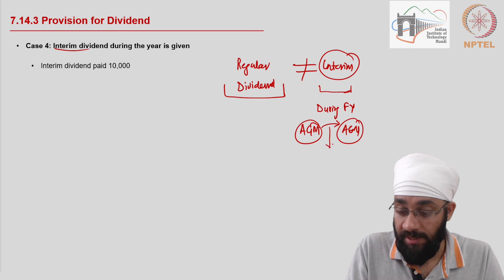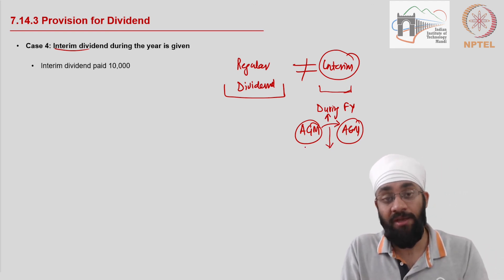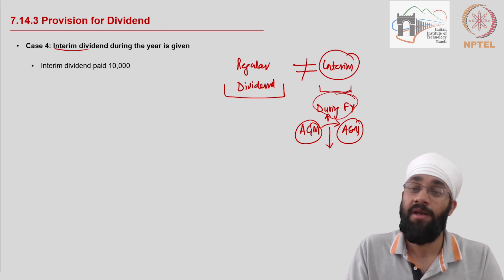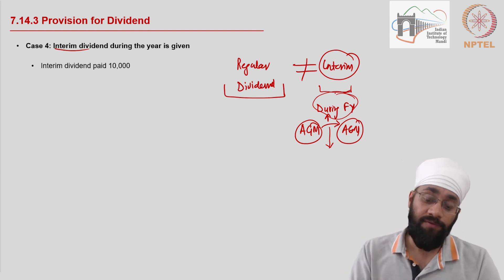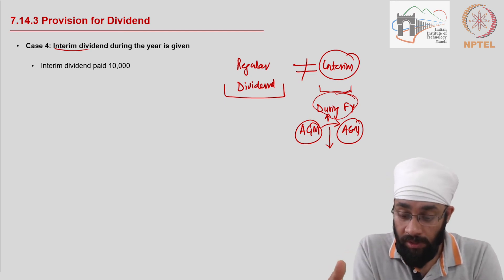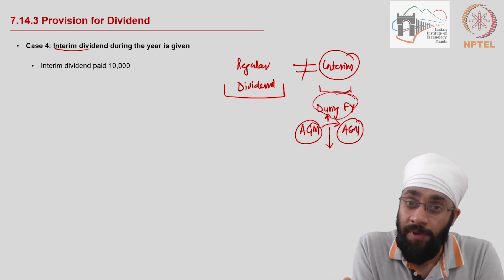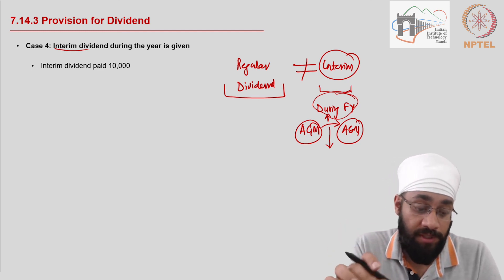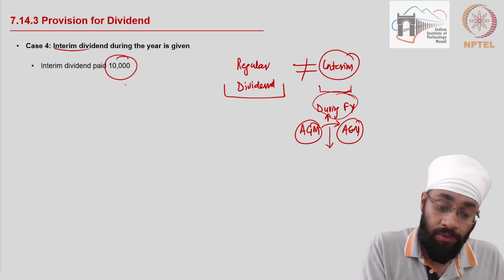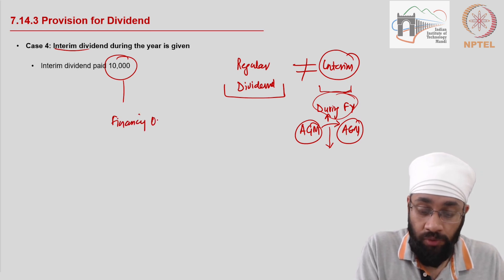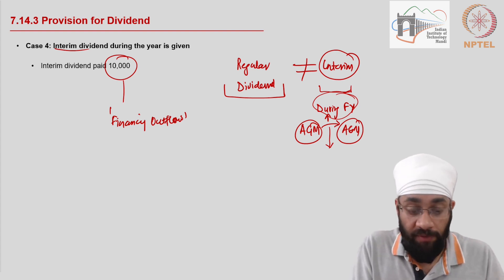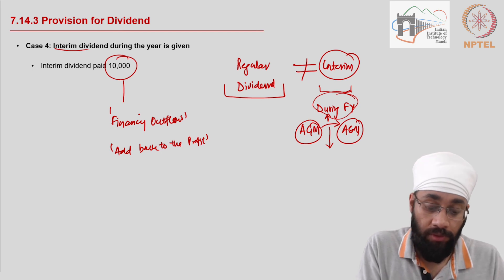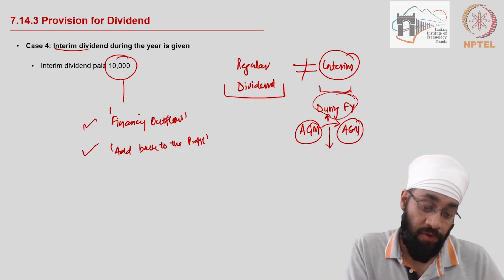If a decision is taken during the financial year — between two annual general meetings — the board decides to pay a dividend and actually pays it. This is called interim dividend. No provision is created for this. The reason is that sometimes you need to support the share price, return money to shareholders, or boost investor confidence. Whenever interim dividend is paid, you take it directly to the financing activities as an outflow, and in operating activities you add it back to the profit and loss account.